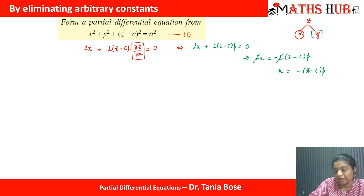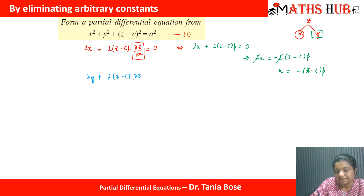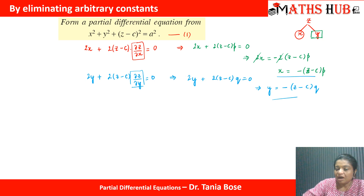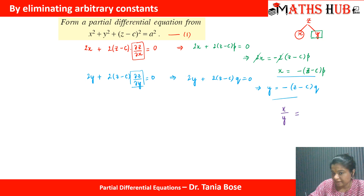Similarly, differentiating with respect to y, keeping x constant: derivative of x² is 0, derivative of y² is 2y, and derivative of (z − c)² is 2(z − c)·(del z/del y) = 0. Using notation q for del z/del y, we get 2y + 2(z − c)q = 0, which gives y = −(z − c)q. To eliminate constant c, we divide the two equations.